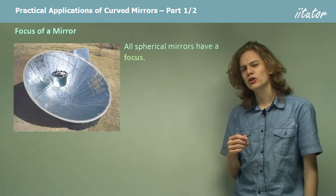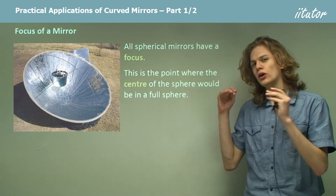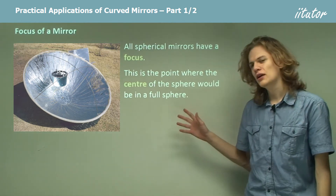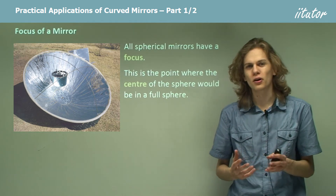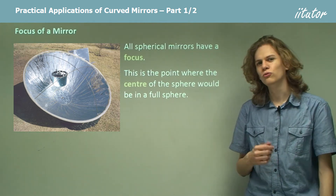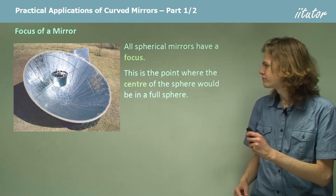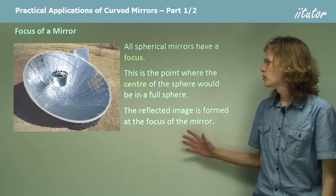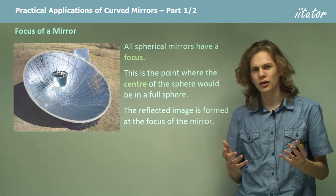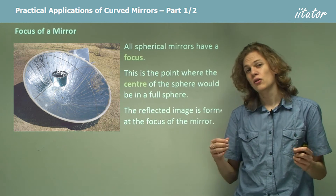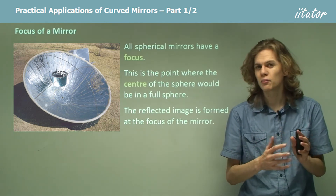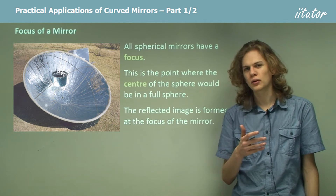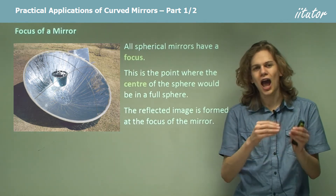All spherical mirrors have something called a focus. That focus is the point where the center of the sphere would be if the whole sphere was still there. In both concave and convex spherical mirrors, the focus plays an important part. The reflected image of a concave mirror is formed at the focus of the mirror. For a convex mirror — one that bulges outward — the virtual image, that is the place where the image seems to be coming from, is once again the focus of the mirror.